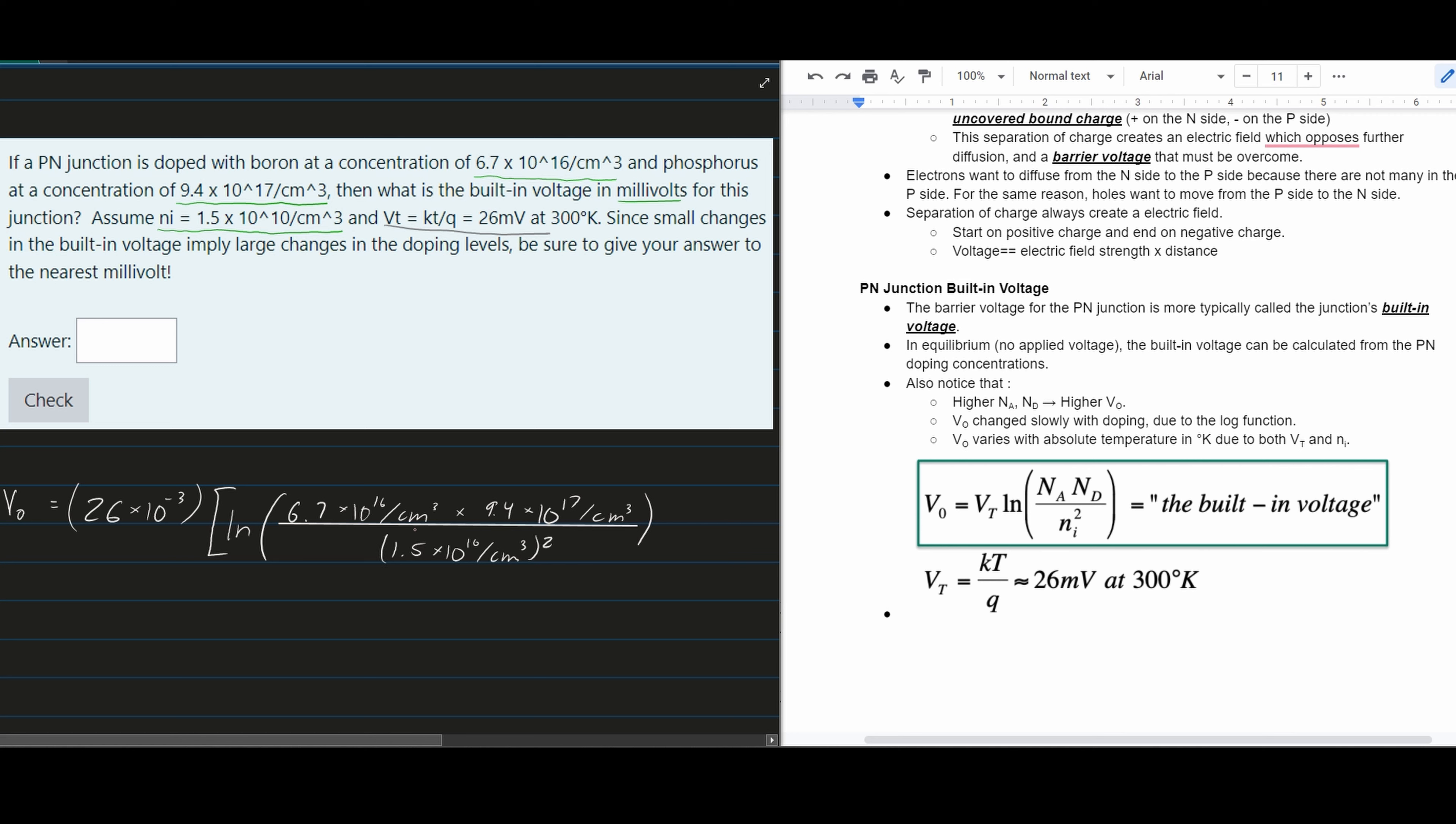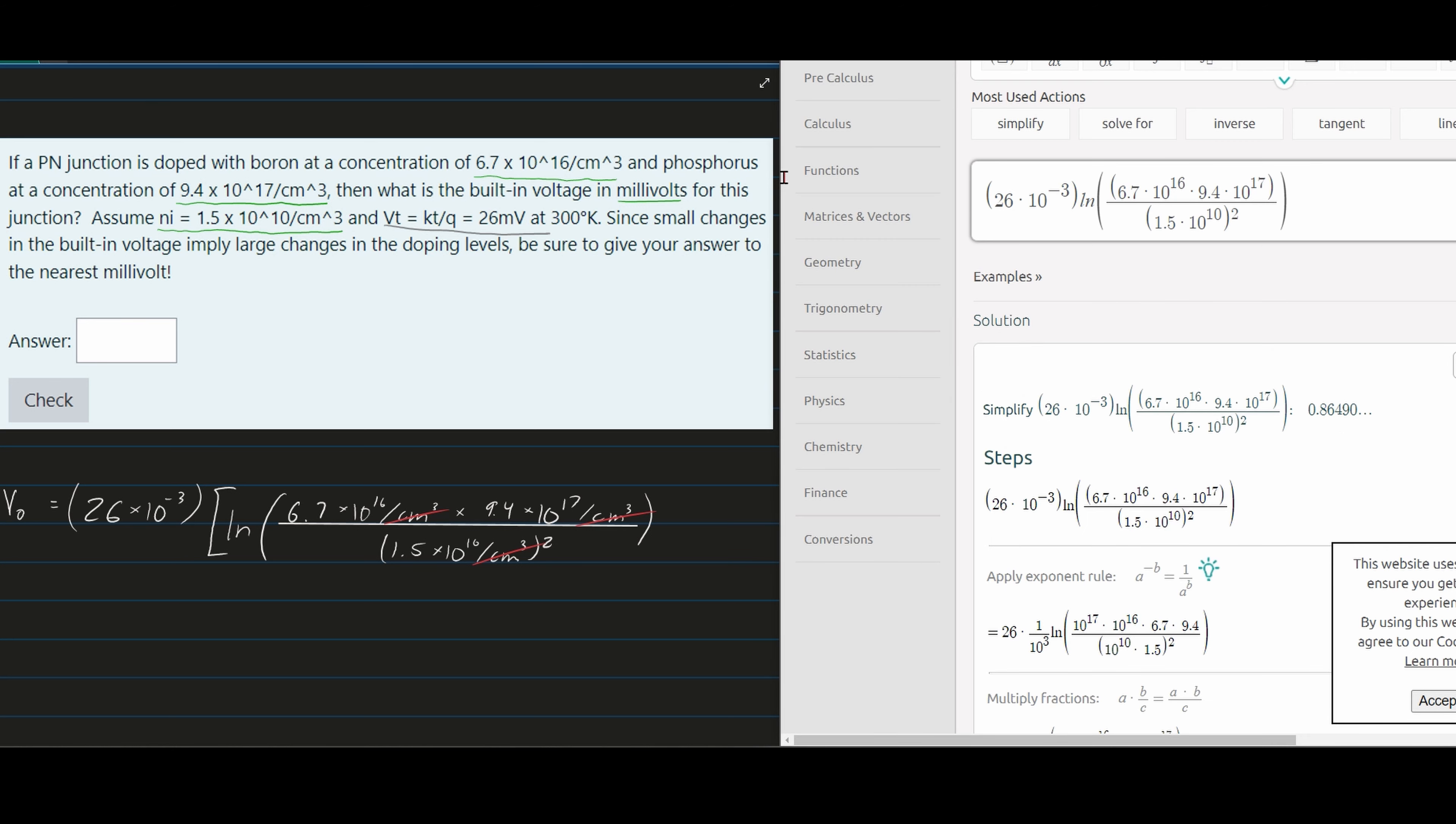The per cm³ units cancel out because of the squared term. Now we plug this into a calculator.